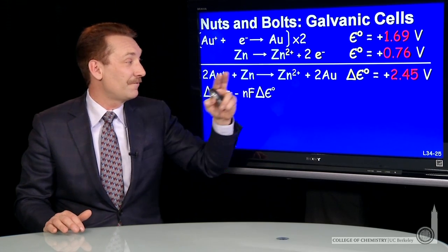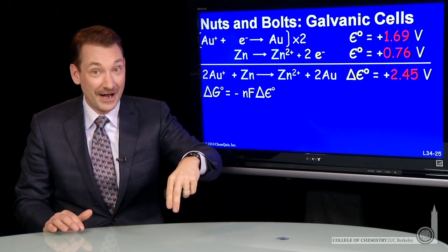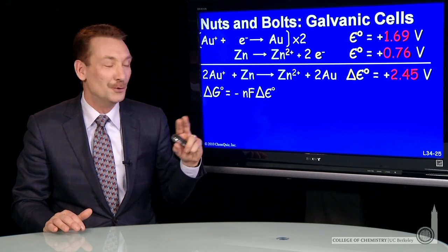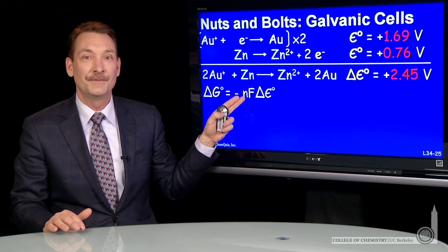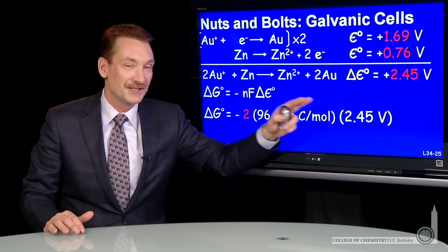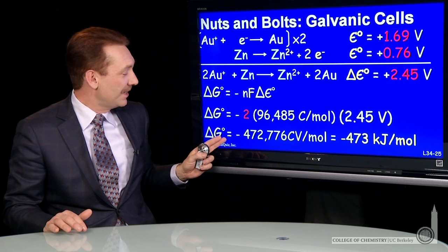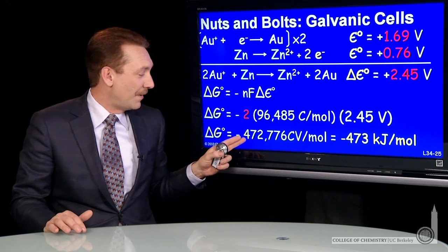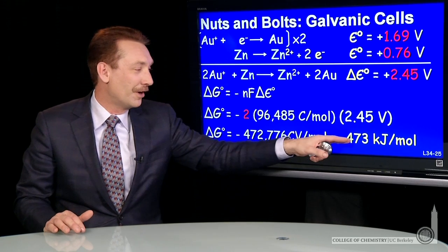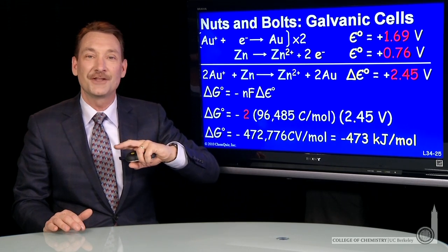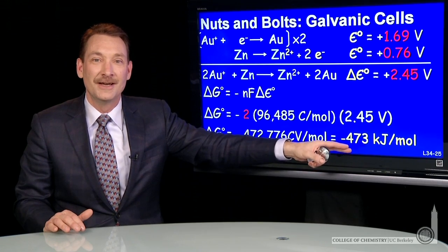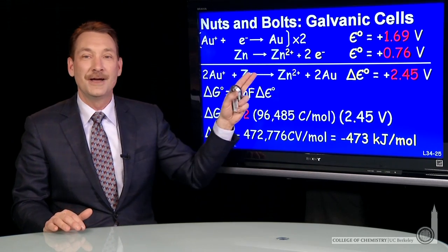And I can convert that voltage to a free energy, taking into account now the extent of the system using my factor of 2 electron transfer. And I can calculate the free energy is 2 times Faraday's constant times the standard potential. And for this, the free energy difference, minus 472,776 coulomb volts per mole, or minus 473 kilojoules per mole. Again, a spontaneous reaction for the reduction of gold by zinc.